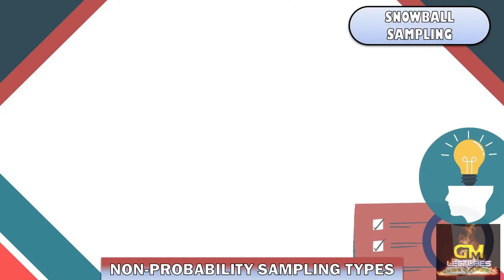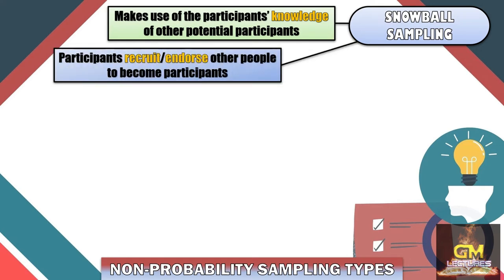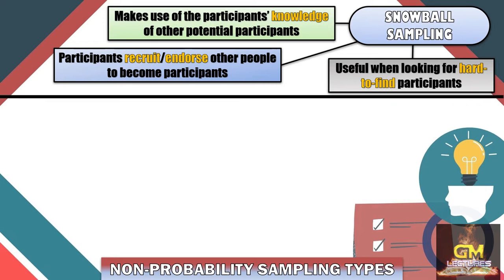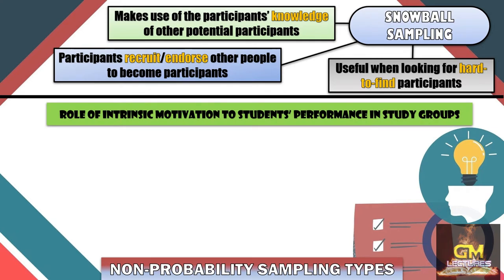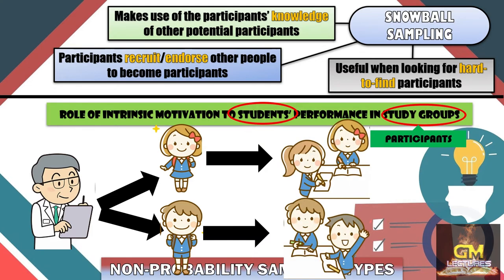Next, we have snowball sampling. Snowball sampling makes use of the participants' knowledge of other potential participants — as such, they are the ones to recruit or endorse other people to become participants in the same study. It is also worth noting that snowball sampling is useful whenever we are looking for hard-to-find participants. For example, in a study that aims to identify the role of intrinsic motivation on students' performance in study groups, the researcher would select students who are part of study groups. Once data has been gathered from them, they would then be asked to recommend other students who are also members of study groups to become part of the research.